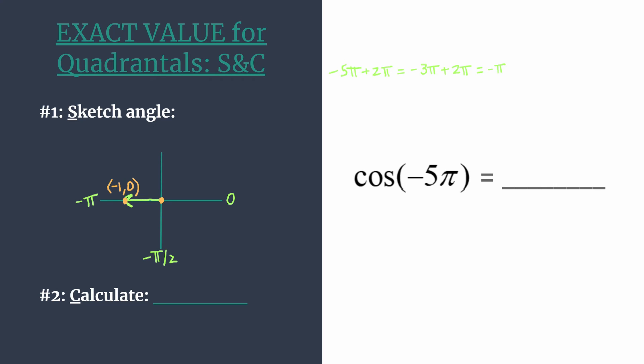And now we can use these coordinates to calculate our trig ratio. So the cosine of an angle on the unit circle is simply the x-coordinate, and so not a lot of calculating here. All we have to do is look at the x-coordinate and we know that the cosine of negative 5π is going to be negative 1.